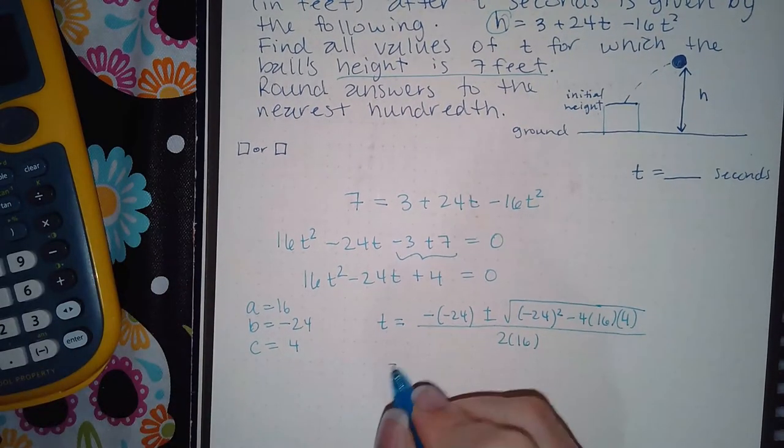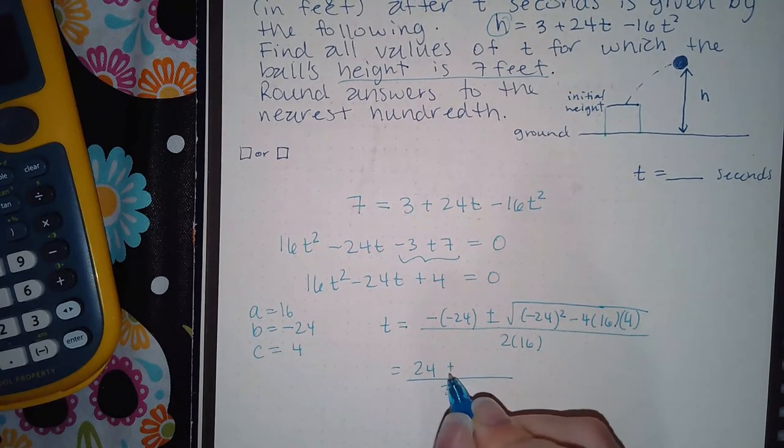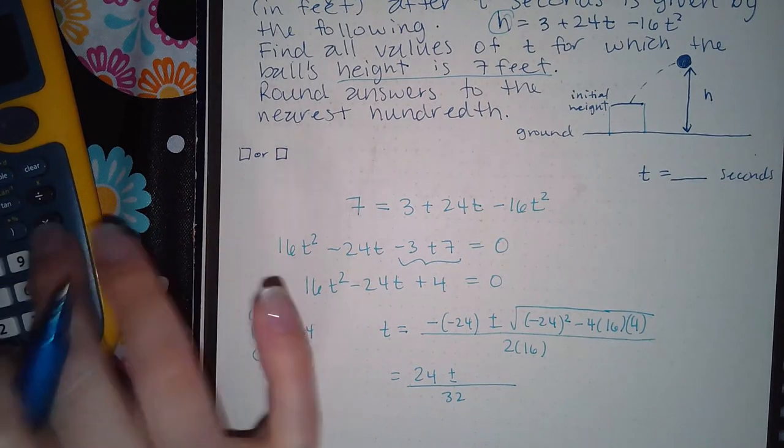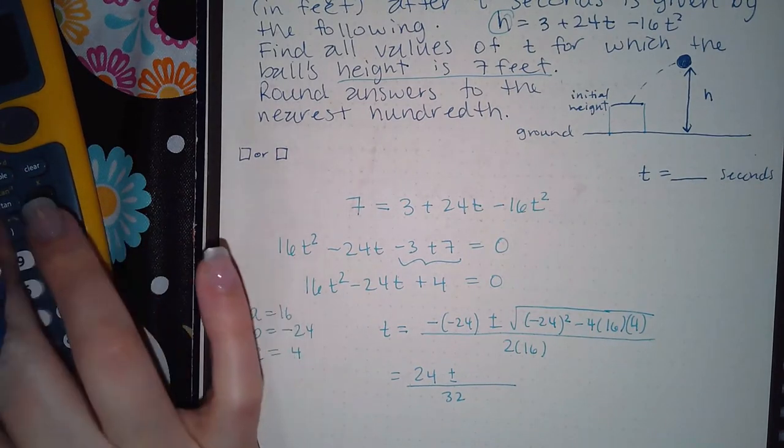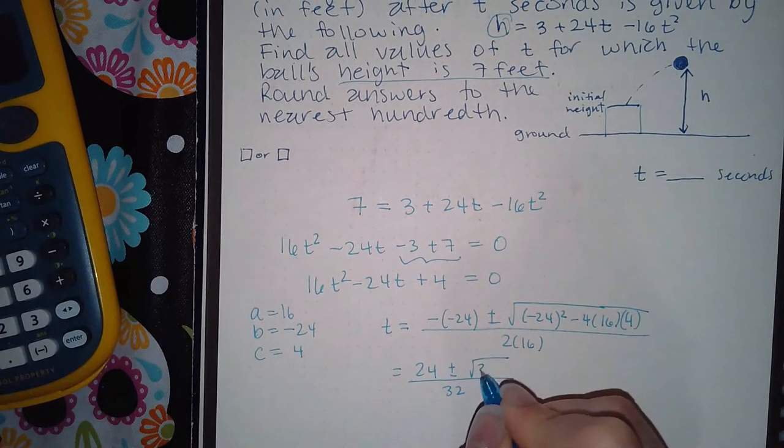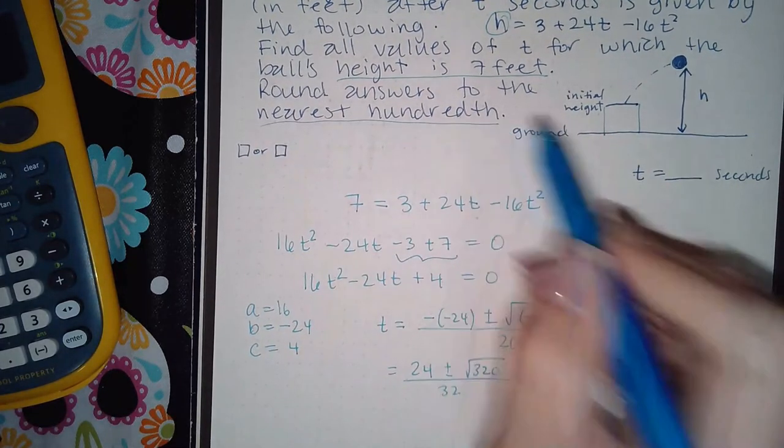So I get positive 24, positive 32, and I'm not sure about that part so let me type that in the calculator. I get square root of 320. Now it does tell me to round my answers to the nearest hundredth.